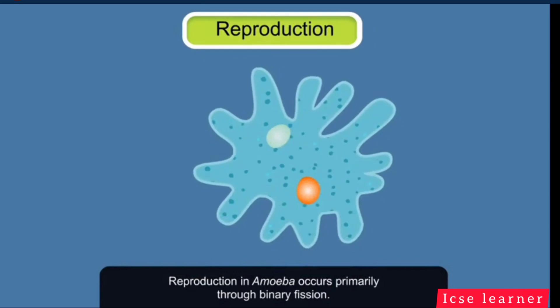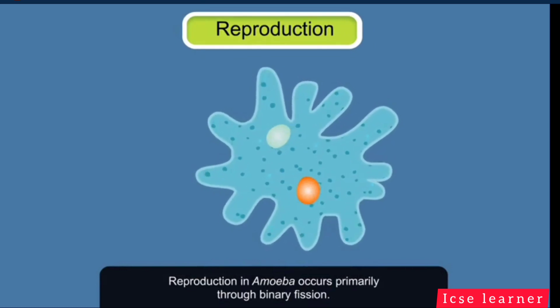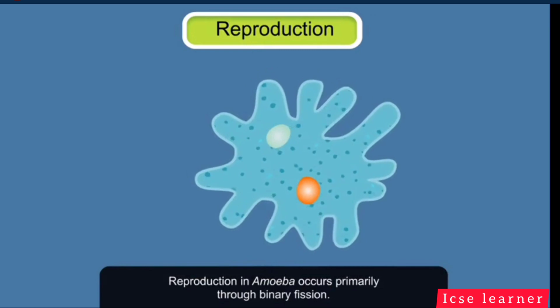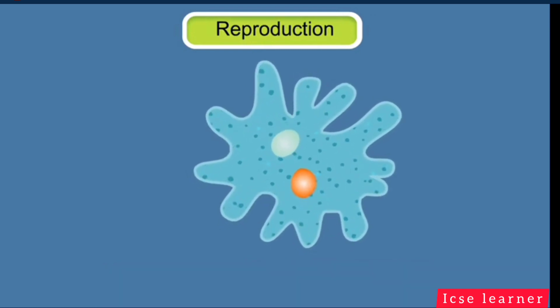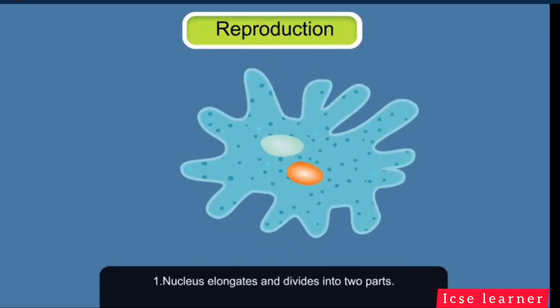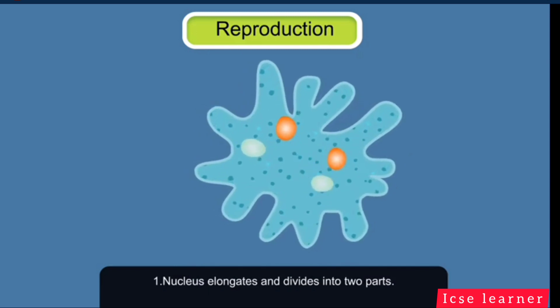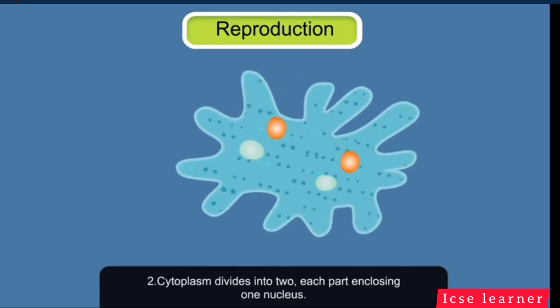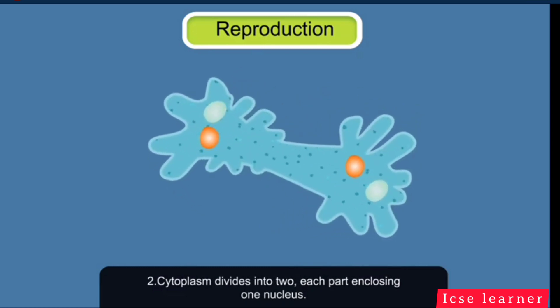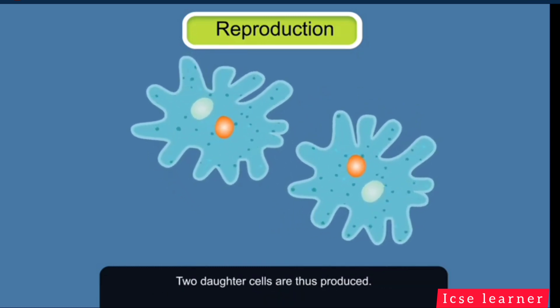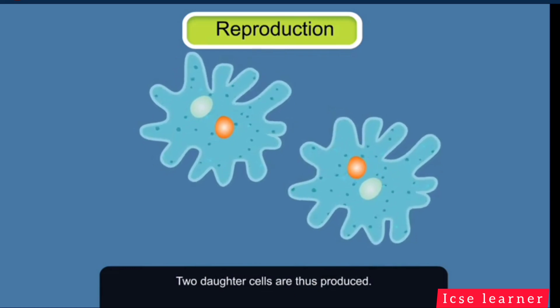Reproduction. Reproduction in amoeba occurs primarily through binary fission. In this method, the nucleus first elongates and divides into two equal parts. After this, the cytoplasm divides into two, each of which encloses one nucleus. In this way, two daughter cells are produced.